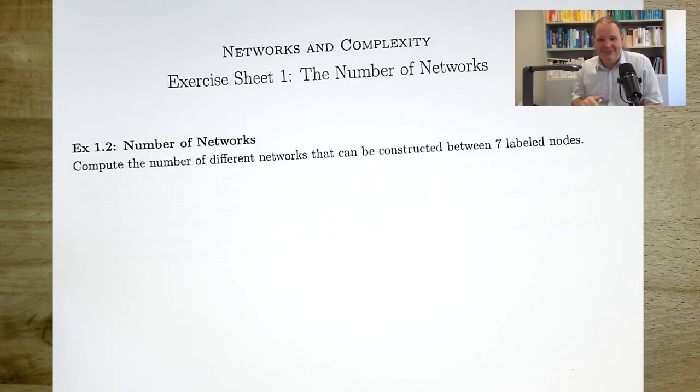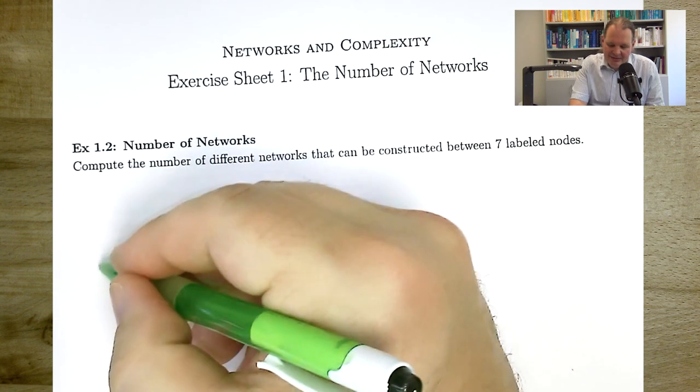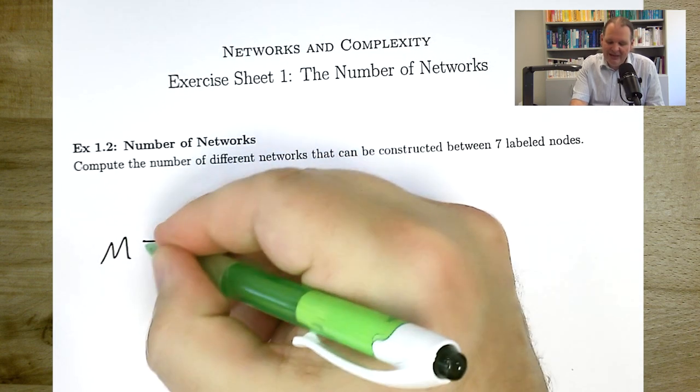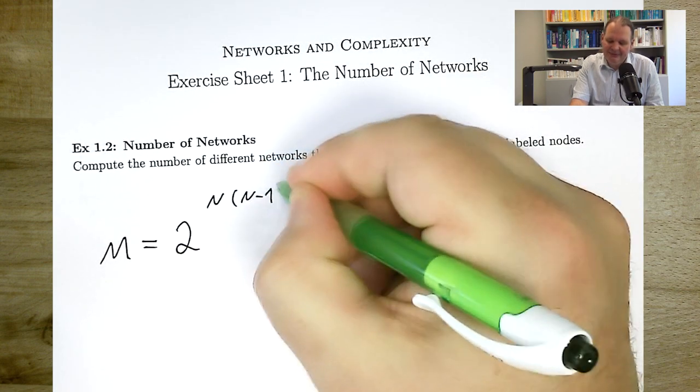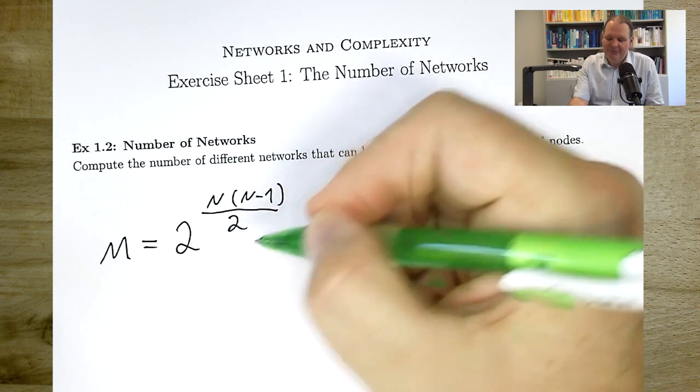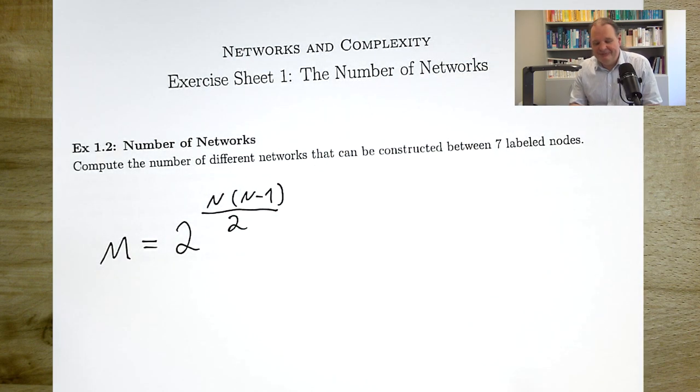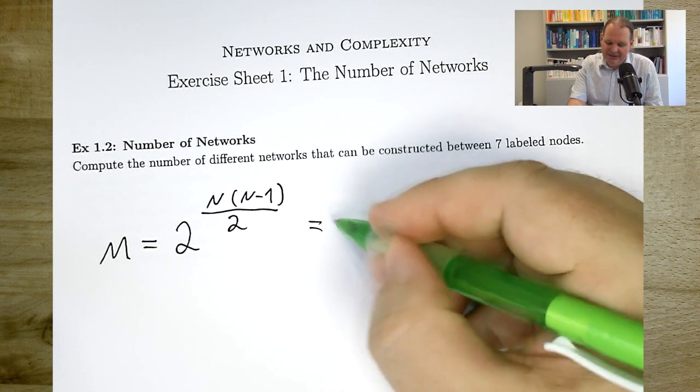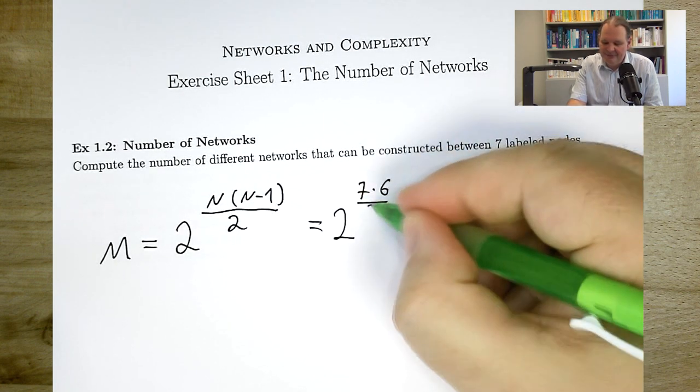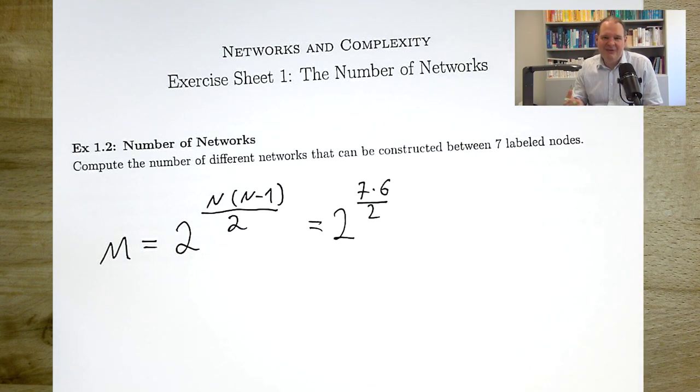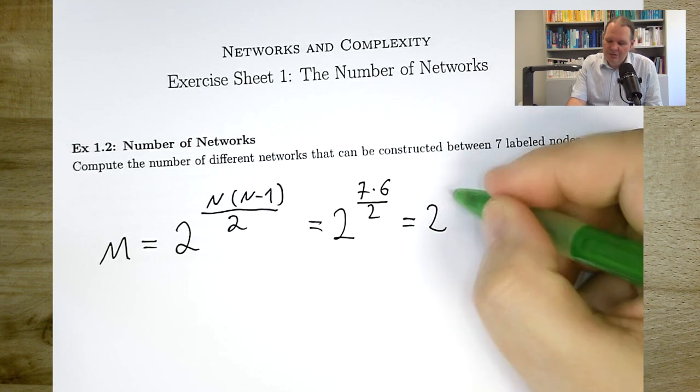Okay, now let me do it. We have a formula for this from the lecture, don't we? From the lecture, we know this number of networks we are looking for is 2 to the n times n minus 1 divided by 2, where n is the number of nodes. Now here we have 7 nodes, right? So we put in the 7. So the answer is 2 to the 7 times 6 divided by 2. 7 times 6, that's 42. If you divide by 2, we have 21. So, 2 to the 21.